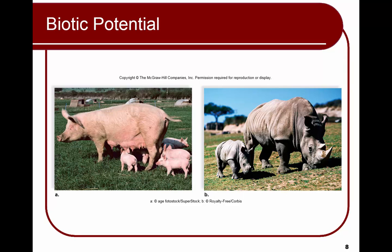Looking at these two pictures regarding biotic potential: the rhinoceros on the left has one baby, while the sow has a big litter. Which one has more biotic potential? The sow has a bigger litter, a greater chance of offspring survival, and a greater chance of offspring reaching reproductive age — and when they reproduce, they'll have a bigger litter than the rhinoceros.